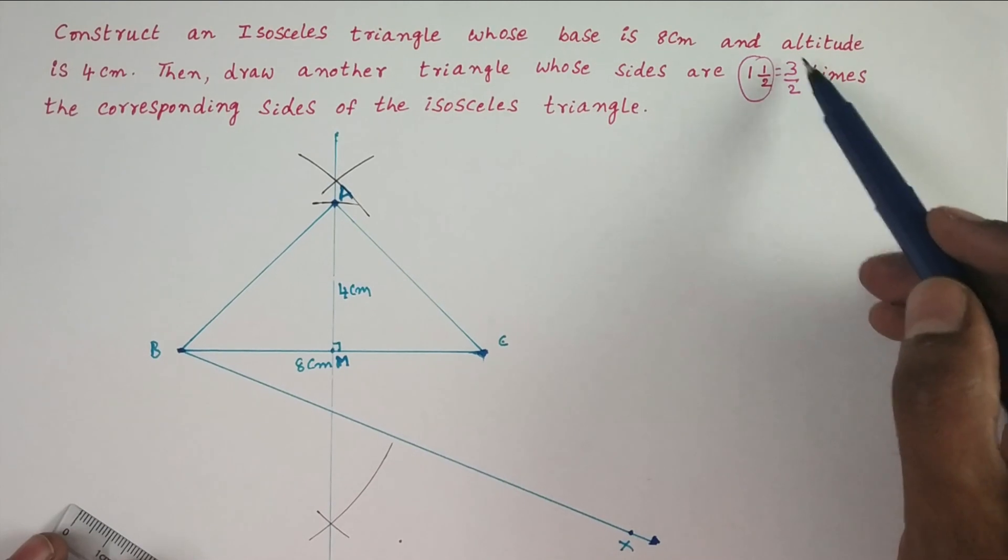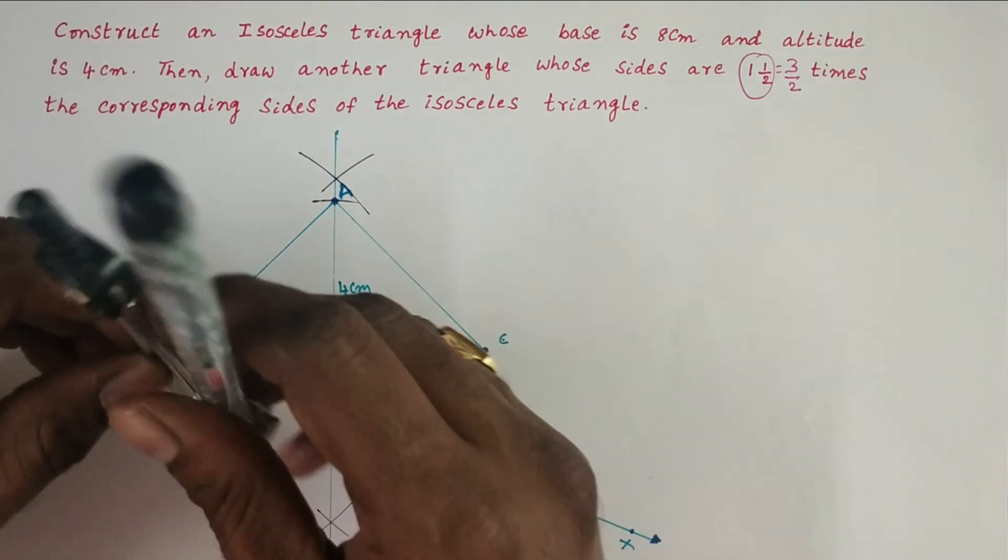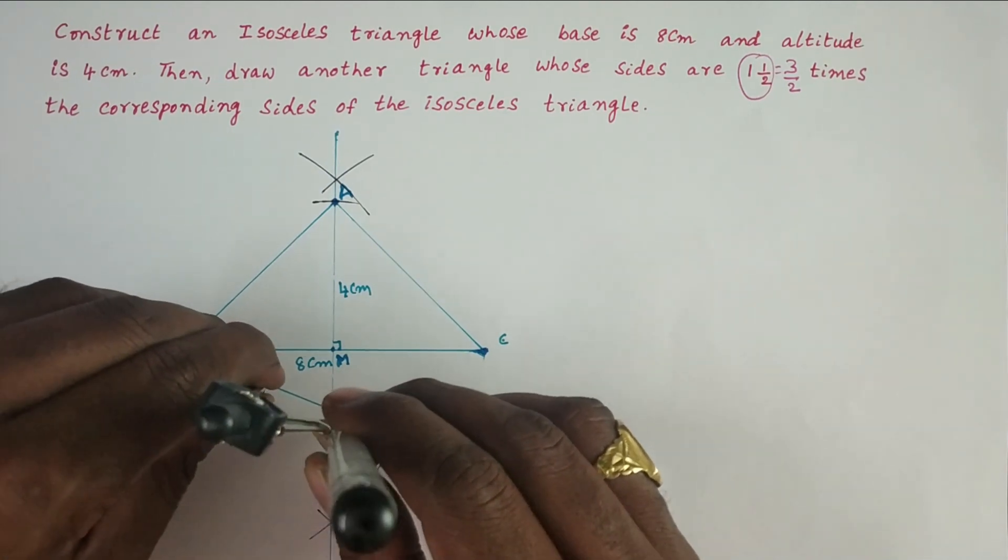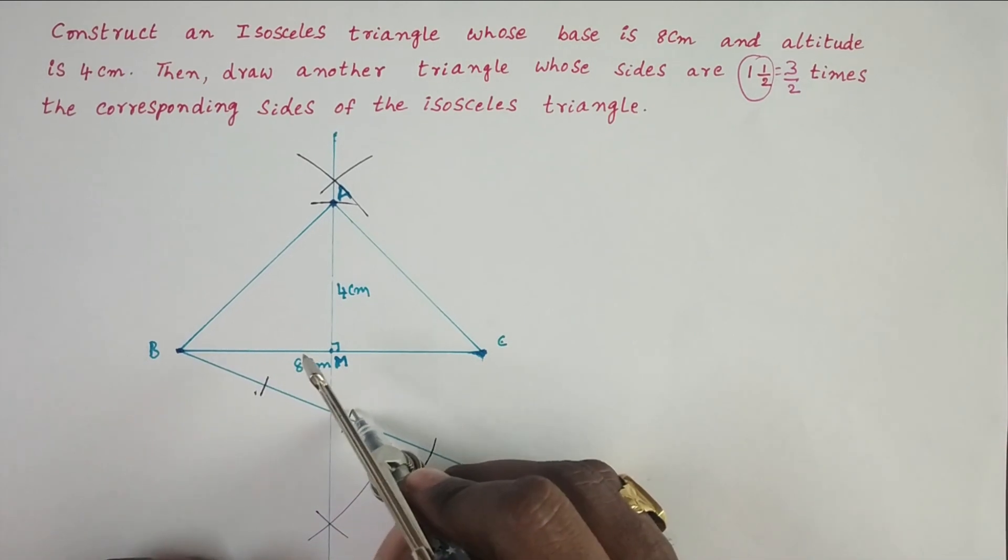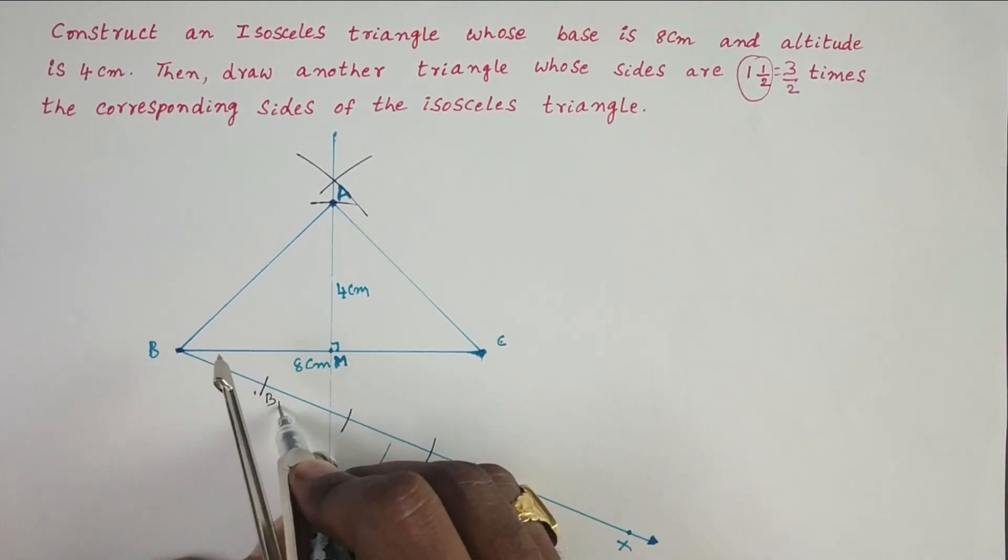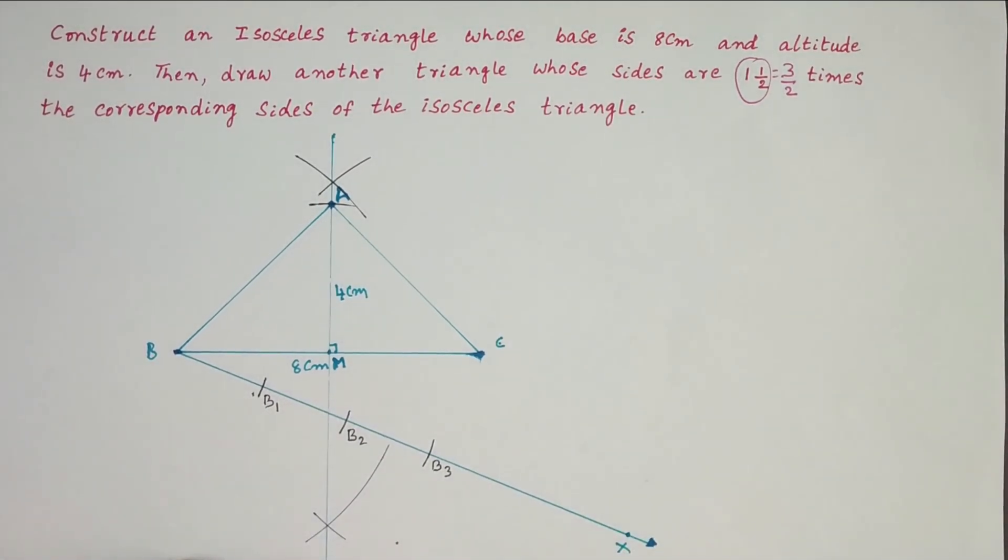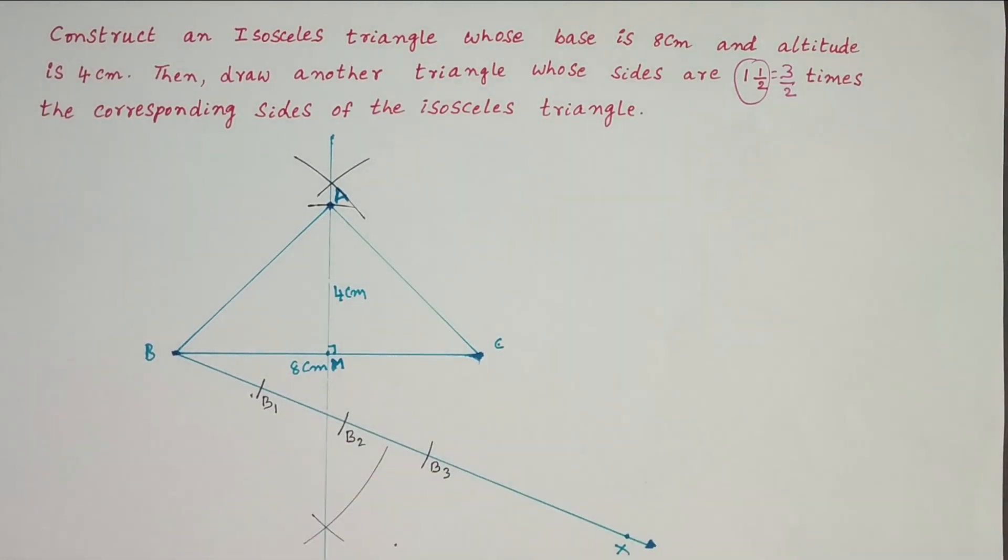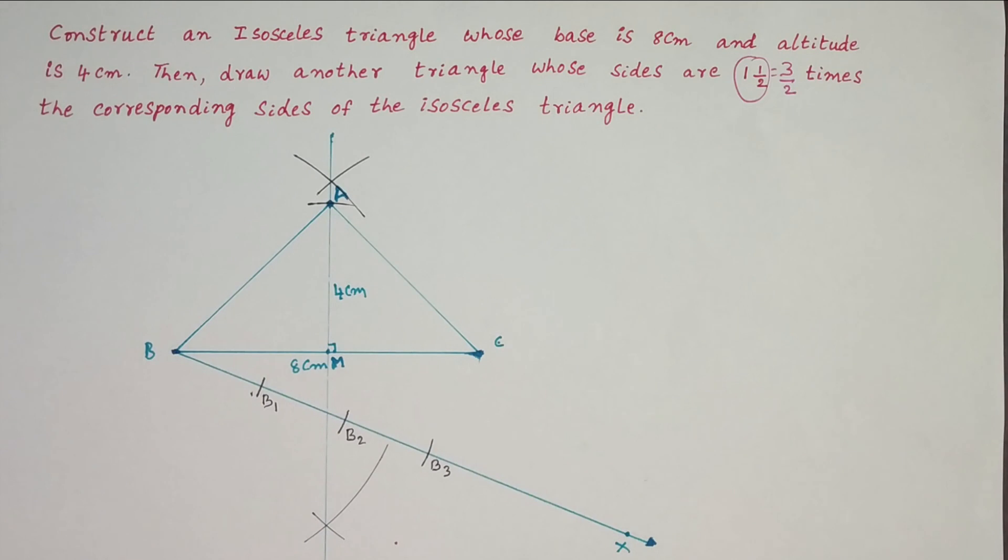Among this ratio, the greatest value is 3, so take three equal arcs on the ray BX from B. Take three arcs on ray BX. We have to locate these three points such that BB1 equals B1B2 equals B2B3. According to the problem, the given triangle has only two parts, so join B2 and C only.